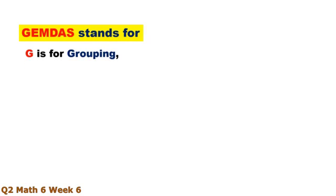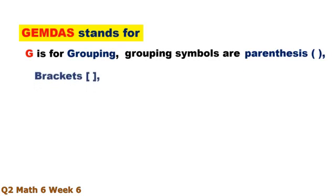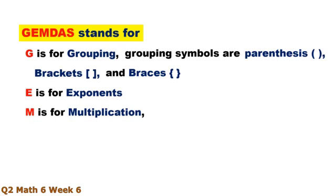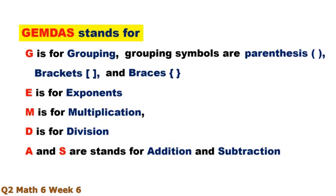GEMDAS stands for: G is for Grouping — grouping symbols are parentheses, brackets, and braces. E is for Exponents. M is for Multiplication. D is for Division. A and S stand for Addition and Subtraction.